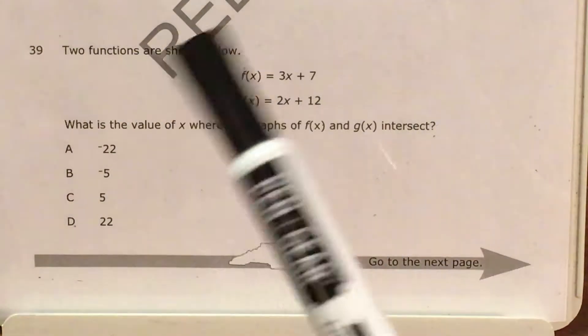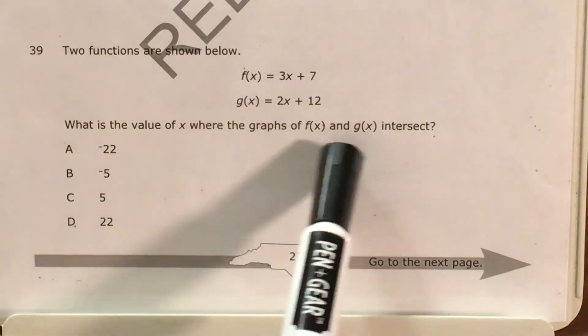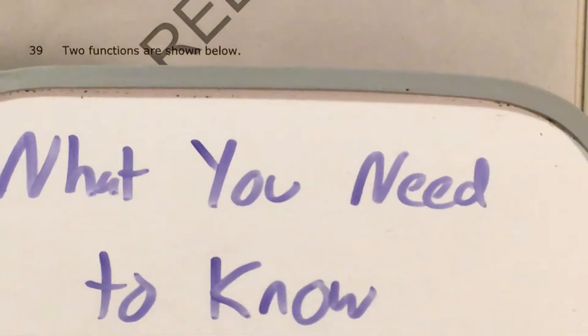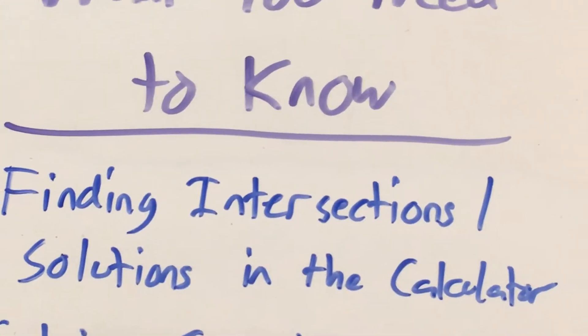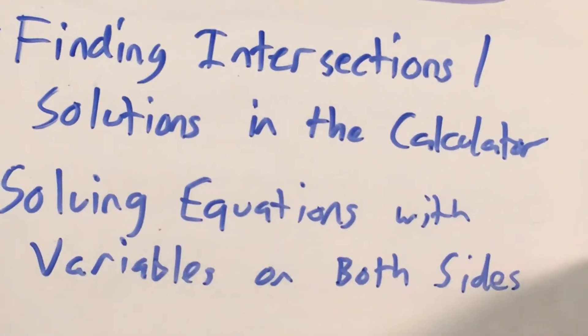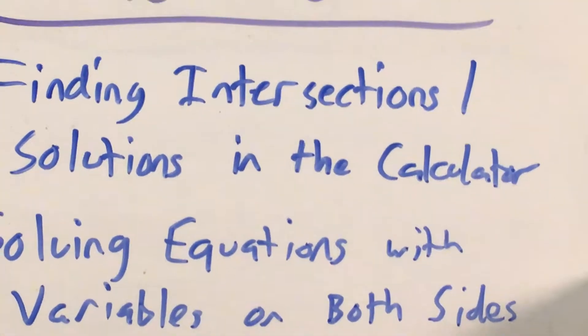The question gives us two functions and tells us to find the value of x where the two functions intersect. Now the big skills that this question tests are actually two different ways of solving it. One is to find the intersection in your calculator. The other is to treat it like an equation with variables on both sides and solve it that way.